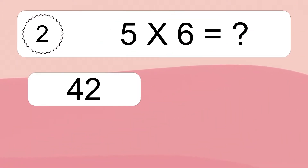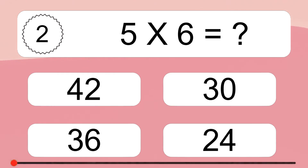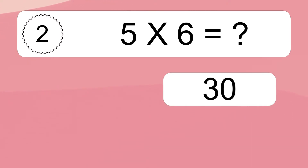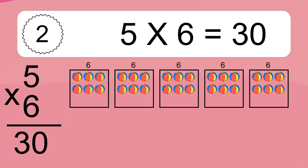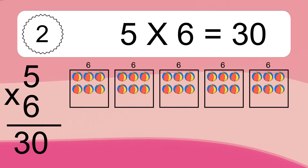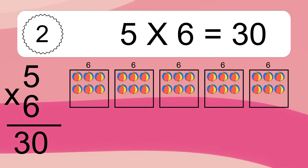5 times 6 equals what? 5 times 6 equals 30. We have 5 boxes, and each box has 6 colorful balls inside. If you count all the balls in all the boxes together, you will have 5 times 6 balls. This equals 30 balls.